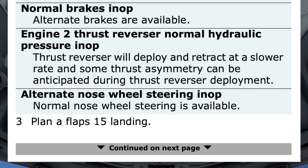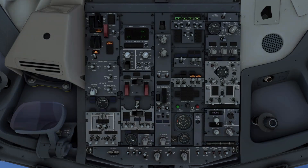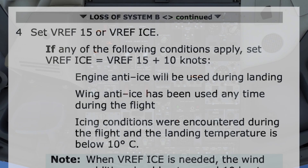Step 3: Plan a flaps 15 landing. Step 4: Set VREF 15, or VREF ice, if any of the following conditions apply. Set VREF ice, which equals VREF 15 plus 10 knots: engine anti-ice will be used during landing — it won't be.